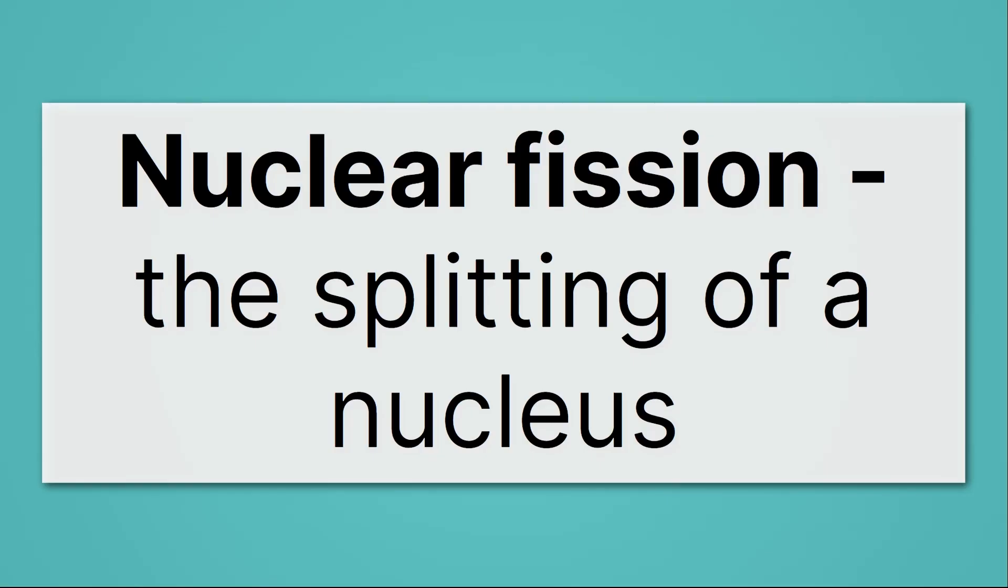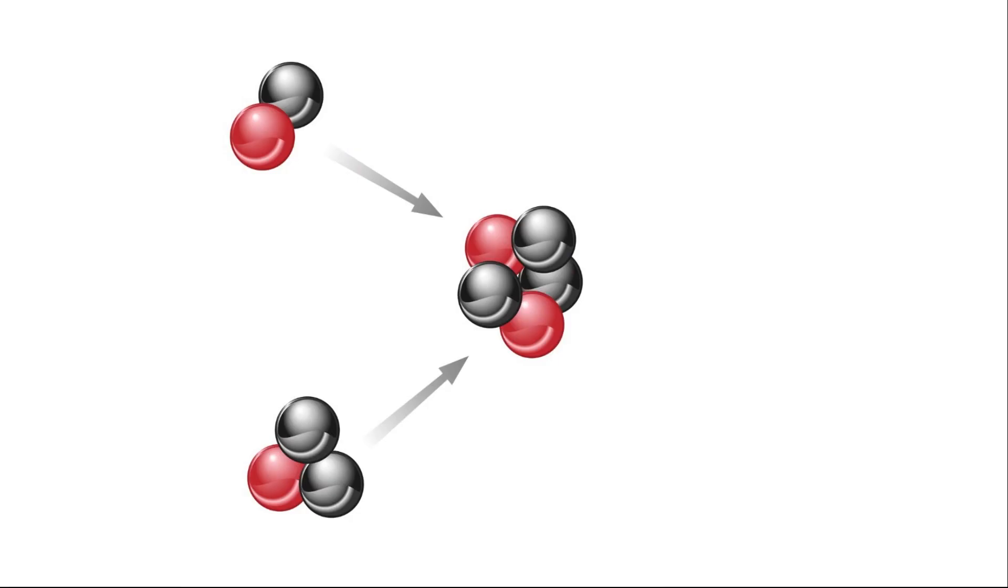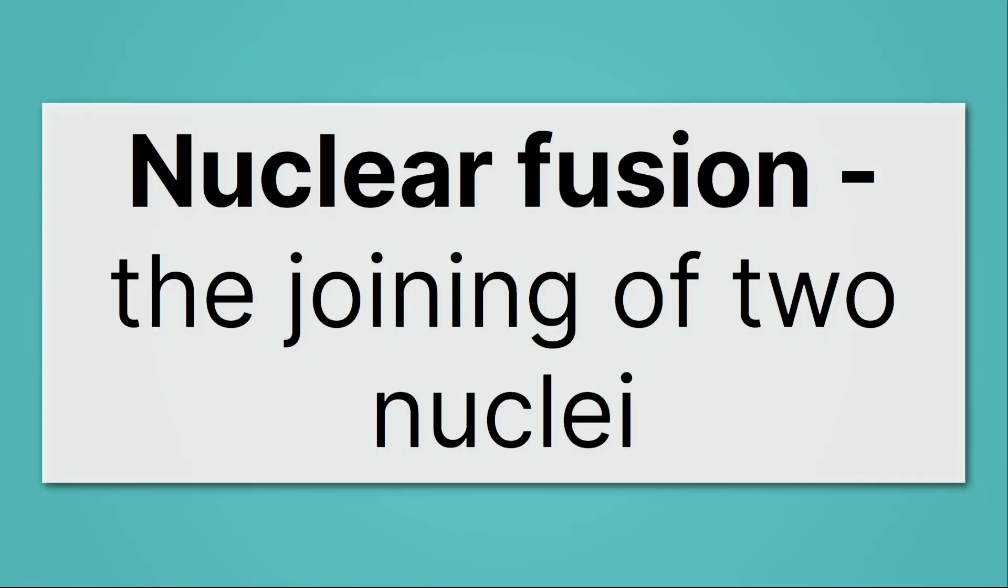This is called nuclear fission. It's the splitting of a nucleus. We can also do the opposite. Here on the left we have two nuclei and they come together to form one nucleus. This is joining two nuclei together. That's called nuclear fusion, the joining of two nuclei.